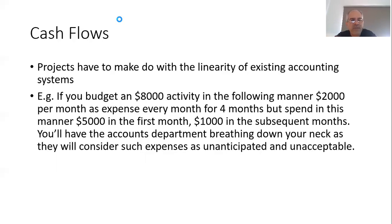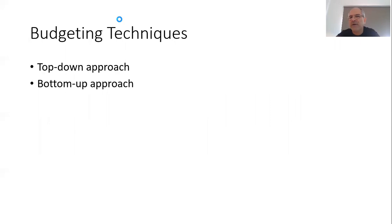Suppose your expenses are $5,000 in the first month and $1,000 in each of the subsequent three months — still $8,000 over four months, but the nature of your cash flow has changed. From a project's perspective this isn't a problem, but you will definitely have the accounting department concerned because they will consider those early expenses unanticipated. You need to understand how you expense out your money once you've defined the budget, and you need a good understanding of your existing accounting process.